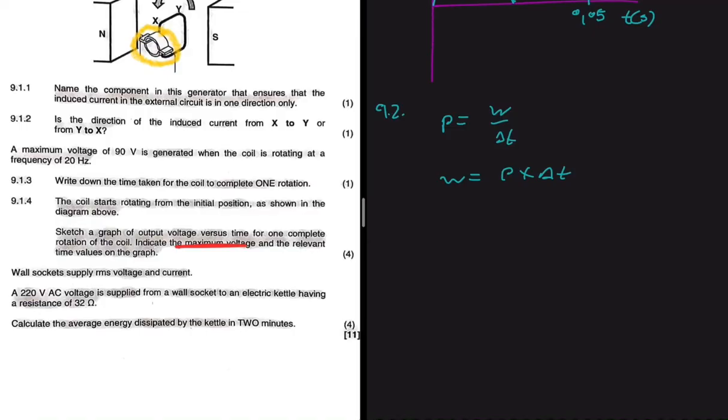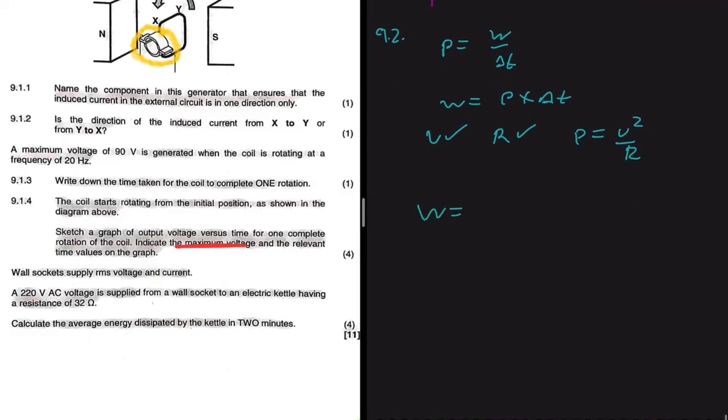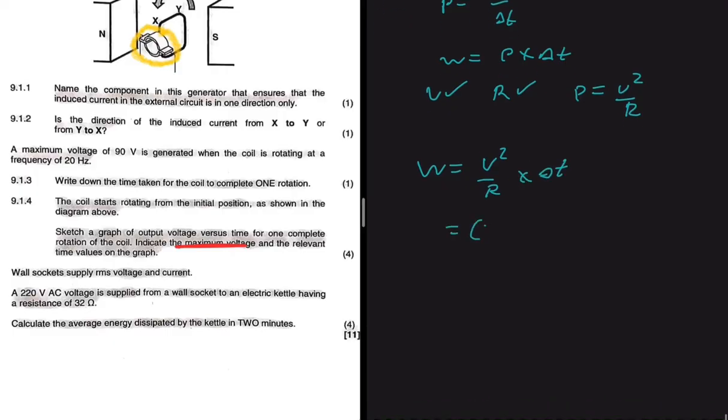The power can take different forms depending on what you have. Here we have the voltage and the resistance, so the power will take the form P equals V squared divided by R. So the energy dissipated will be V squared divided by R multiplied by the time. What is V? V is 220 volts, so we square that. R is 32, and then the change in time is two minutes, so we have 2 multiplied by 60. Now if I put that in my calculator, so I have 220 squared divided by 32 multiplied by 120, and I'm getting 181,500 joules.